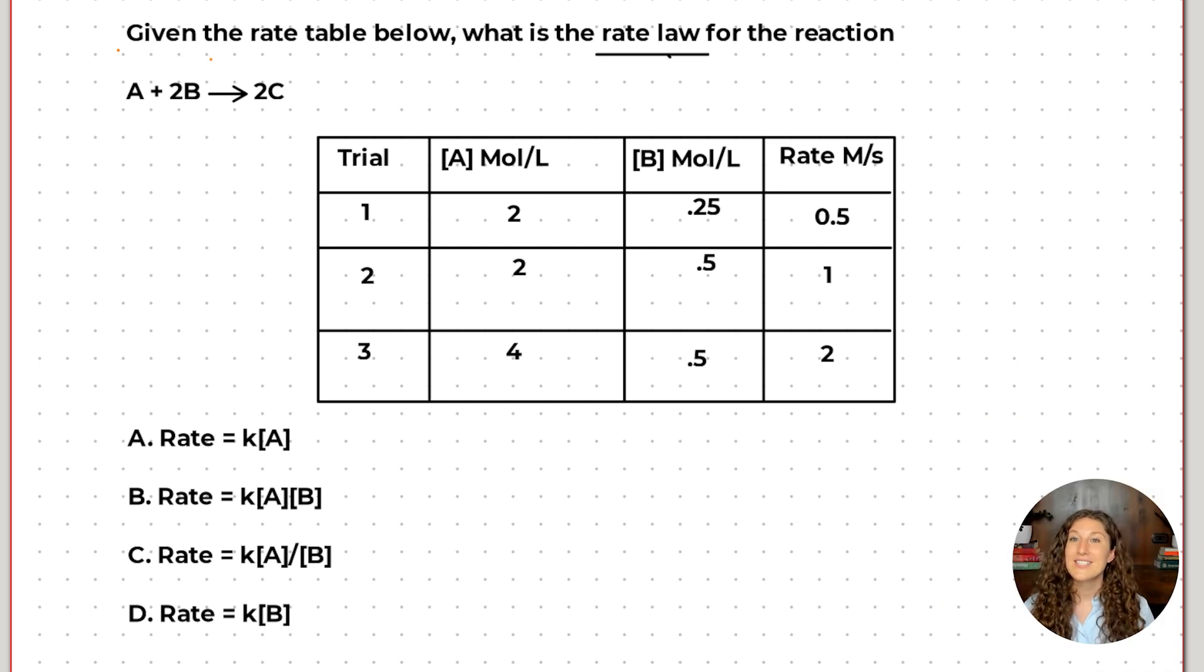Okay so the question states given the rate table below what is the rate law for the reaction A plus 2B reacts to form the product 2C? So this could have been anything they could have given us hydrogens and heliums or salts right so it doesn't really matter what the reaction is what matters is the information in the table here and what our rate law equation is going to be.